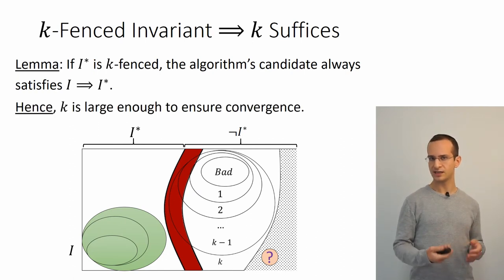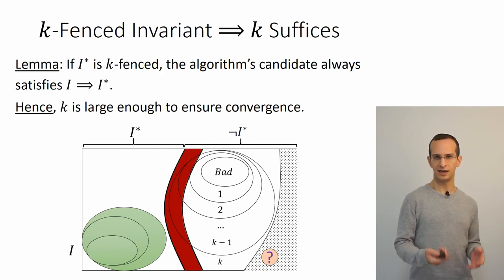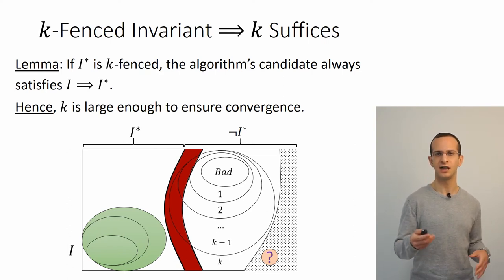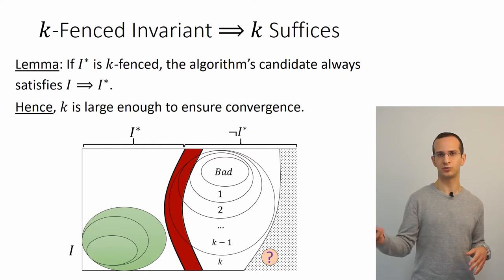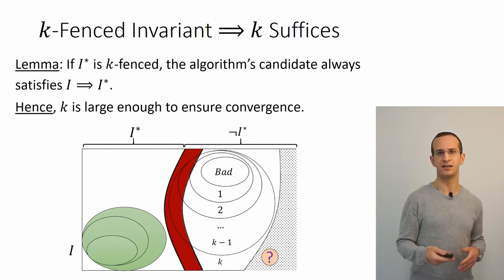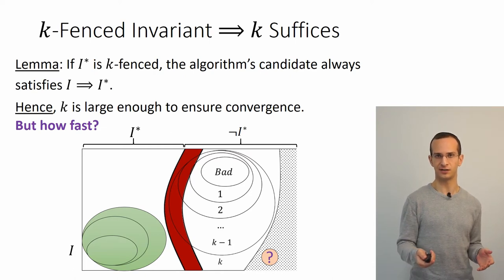This means that if k is large enough so that there exists a k-fenced invariant, the algorithm necessarily converges to some inductive invariant—it can't overshoot and get to a state where it needs to restart. The remaining question is: how fast does the algorithm converge to an inductive invariant?